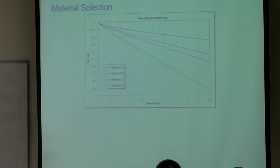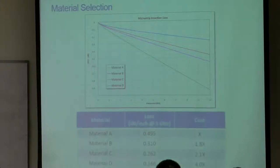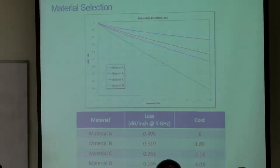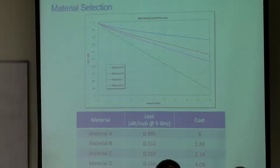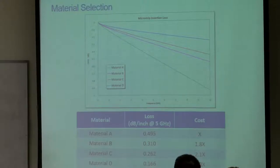Since we're designing on PCB, we have to pick our materials, and you have a lot of options. Here I have some generic materials A, B, C, and D from various vendors, showing loss versus frequency. Some have less loss and some have more, but generally as materials get less lossy they also get more expensive. Depending on your design, you need to weigh the advantages of cost versus performance. We'll pick a material we want to use and move forward.